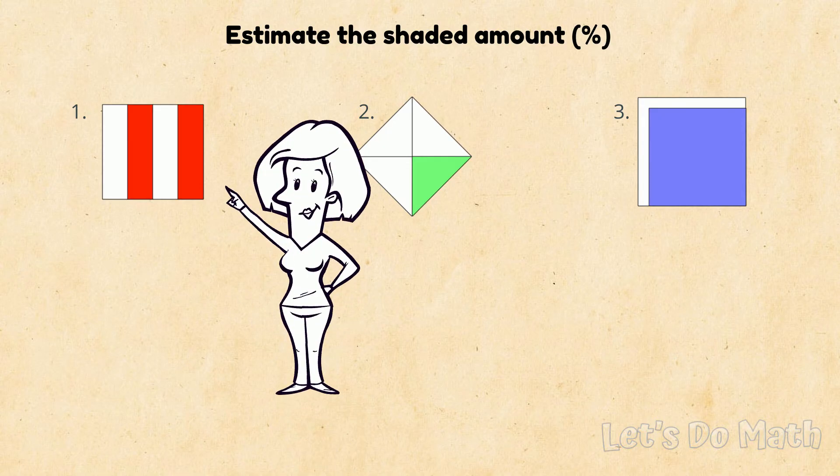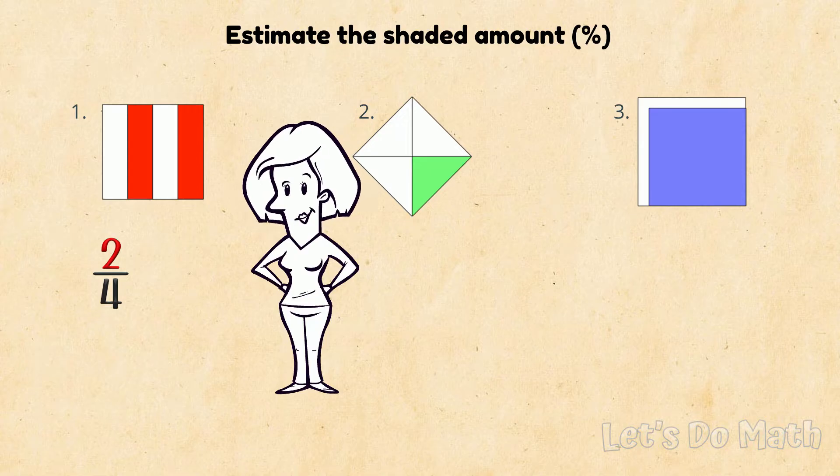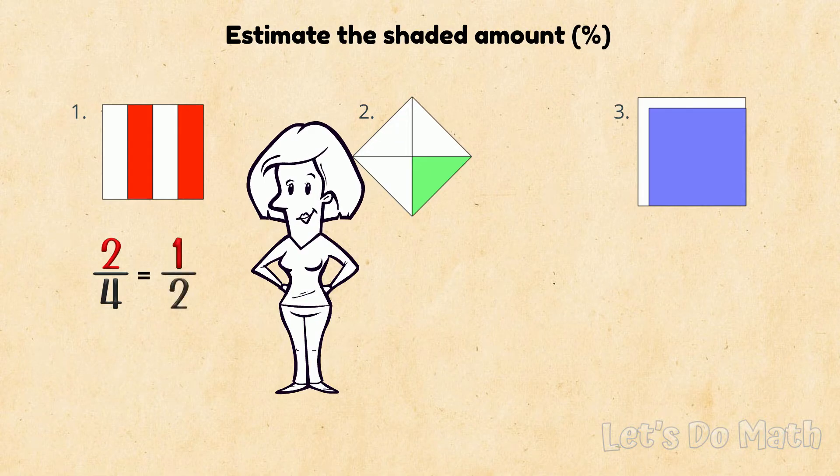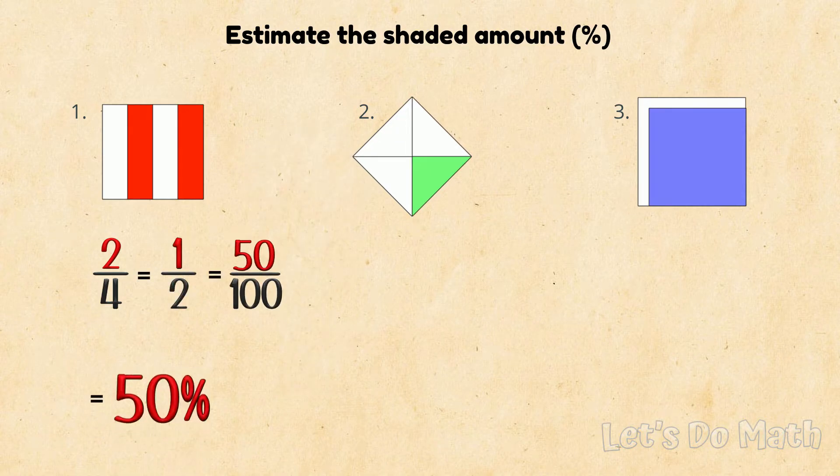In this one, there's 2 parts shaded out of 4 equal parts. Of course, that's the same as 1 half. And you know, that's the same as 50%!